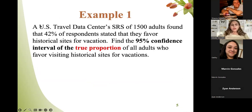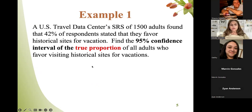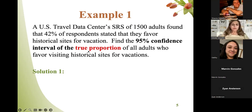Example one: A U.S. Travel Data Center's simple random sample of 1,500 adults found 42% of respondents stated that they favor historical sites for vacation. Find the 95% confidence interval of the true proportion of all adults who are visiting a historical site for vacation. The parameter here is proportion.